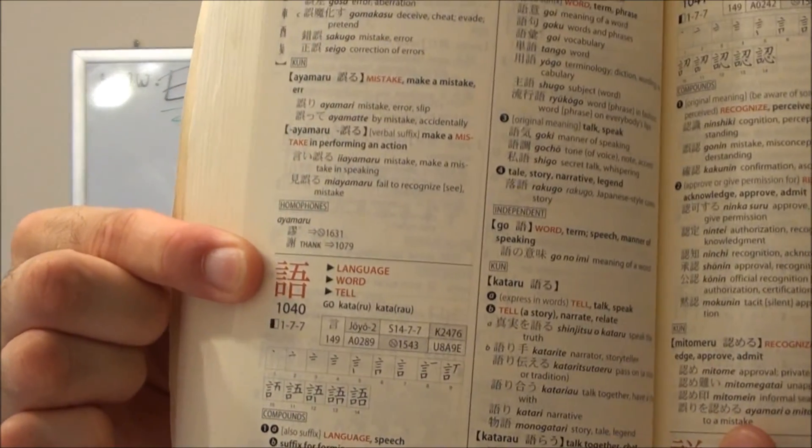There he is! Number 1040. In this book, he's number 1040. This is not always true. In different books, they're different numbers. The radicals generally stay the same. The number in which the kanjis are entered into a book are generally different. We flip our page, open to number 1040. Bada-bing, bada-boom. That's how we find them. If you don't know how to pronounce the kanji, that's generally how you do it.